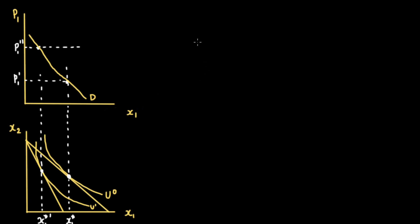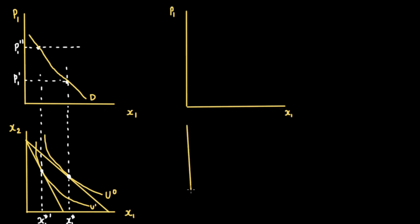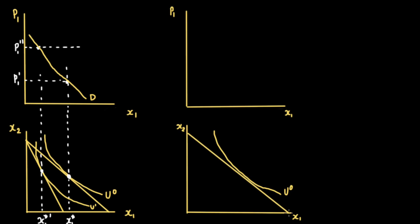We've also discussed how the total effect — the change in our Marshallian demand — can be broken down into the income effect and the substitution effect. In this video, we'll also be talking about that. So we'll draw another price-quantity map with axes X1 and P1, and below it another indifference map with axes X1 and X2, along with a utility level U naught and a budget line.